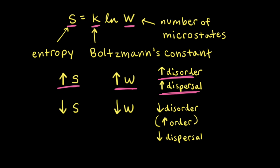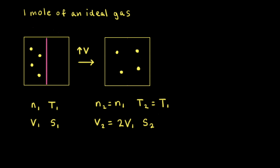And if we think about a decrease in the disorder of the system, or an increase in the order, or a decrease in the dispersal of either matter or energy, that really relates to a decrease in the number of available microstates, which means a decrease in the entropy of the system. Next, let's think about the change in entropy for a number of different situations.